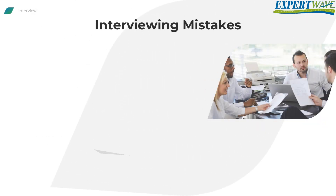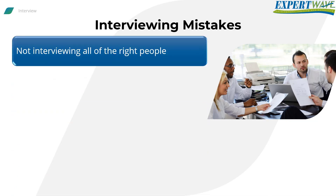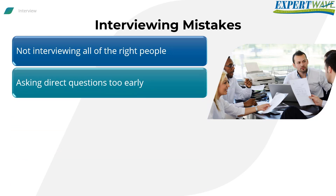There are common interviewing mistakes we need to be aware of. First, not interviewing all of the right people, where we might miss different points of view of stakeholders. Second, asking direct questions too early. For example, asking 'How important is list view over grid view?' is a direct question, while asking 'How do you prefer your files to be displayed?' is a better indirect question.